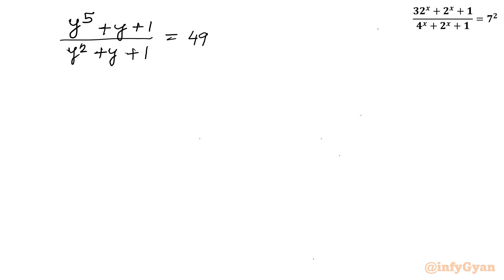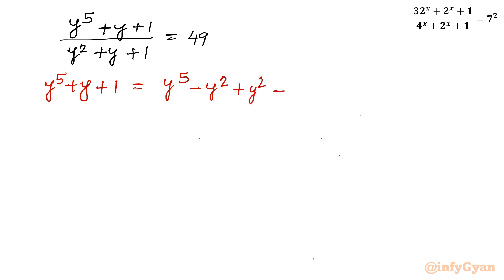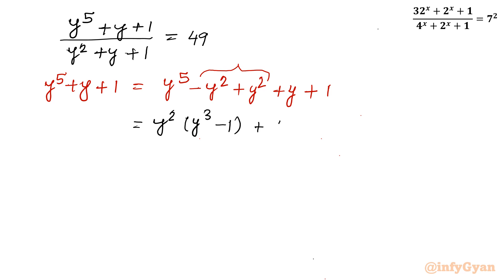Now I will work on the numerator only. Consider the expression y^5 + y + 1. I will apply an algebraic manipulation by writing y^5 − y² + y² + y + 1 — that is, I added and subtracted y². From the first two terms, y² is common, so taking y² out gives y²(y³ − 1), then remaining terms y² + y + 1.